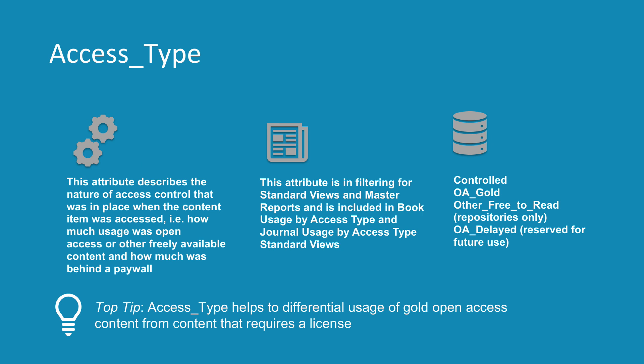The attribute Access Type describes the nature of access control that was in place when the content item was accessed — that is to say, how much usage was open access or other freely available content, and how much was behind a paywall. Controlled usually means content behind a paywall, but it may be content which requires some form of registration before access is granted. OA gold means content that is immediately free to read on publication, often but not always because of payment of an article processing charge or APC. Other free to read is content which is open to everyone for a period or permanently, but which is not OA gold, and it only applies to repositories. Finally, OA delayed means content which was once behind a paywall but which has now become openly accessible after an embargo period. OA delayed is not currently implemented in Release 5, but is reserved for future use.